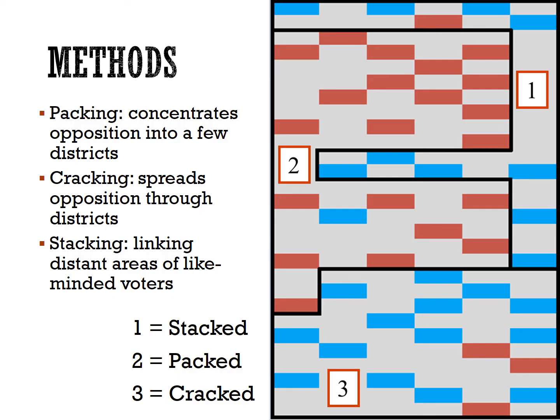Wasted votes mean that people are less likely to participate because they don't feel like their vote will make a difference. One final gerrymander strategy is called stacking, which links geographically distant areas to create a majority where one may not exist. This is where some of the very elongated congressional districts come in. But things are more complicated than just the shape of a district.